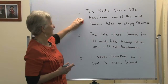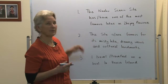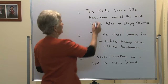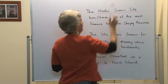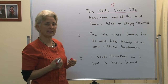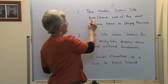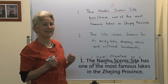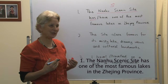Number one: the Nanhu Scenic Site has one of the most famous lakes in Jiaxing province. The Nanhu Scenic Site is the subject of this sentence. It is singular — it has a singular verb — and it is in the present tense because it is always true.